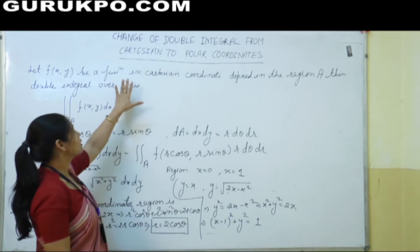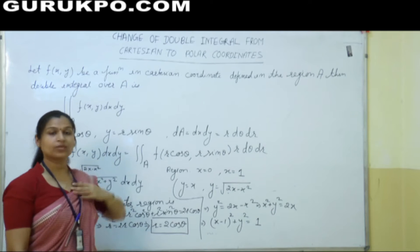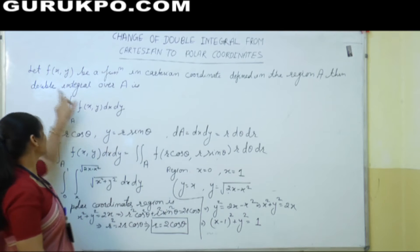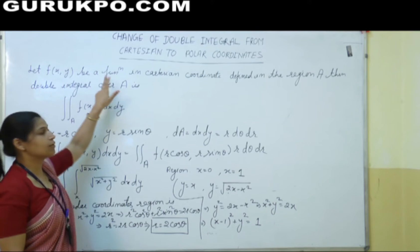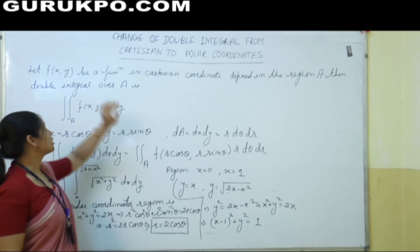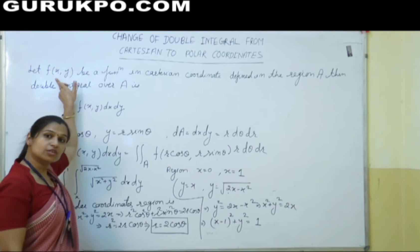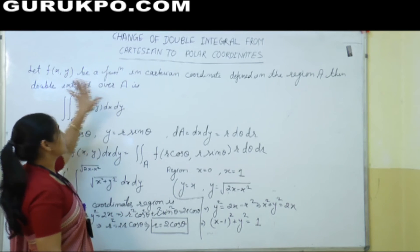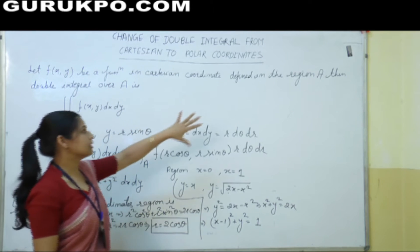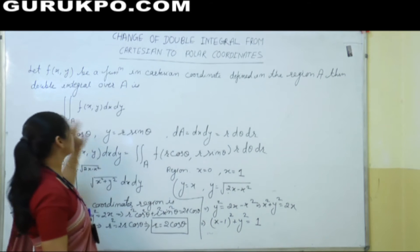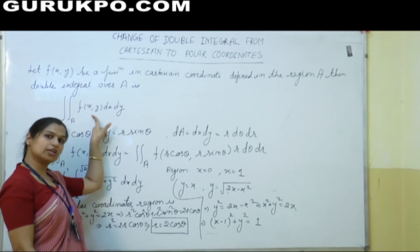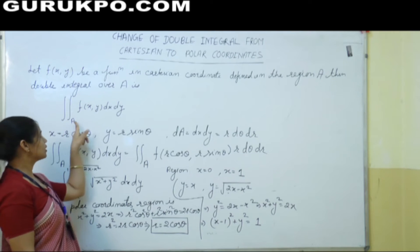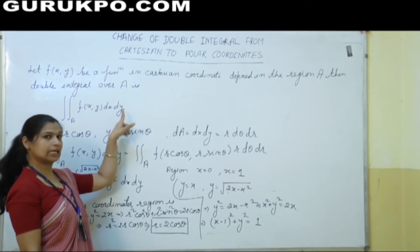That means whenever your function is given in Cartesian form, then how you can change it into polar form. Let f(x,y) be a function in Cartesian form — whenever your function is given in terms of x and y and this function is defined in the region A, then we know that double integration of this function within the region A is defined as double integration over A of f(x,y) dx dy.